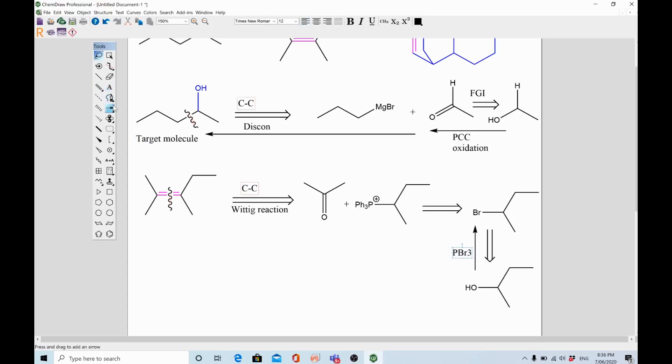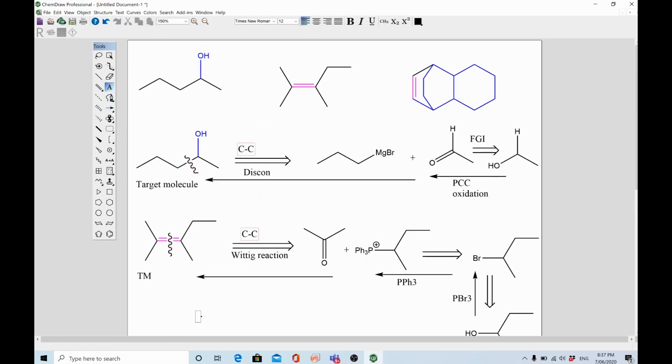bromine. Then you will use triphenylphosphine as a nucleophile to prepare the Wittig reagent. In the last step, you can combine triphenylphosphine Wittig reagent and ketone to get your target compound. You simply write TM.